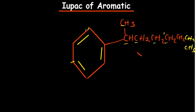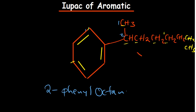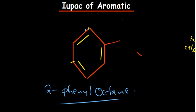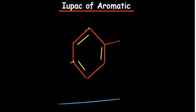With a longer chain, the benzene attached on carbon two gives 2-phenyloctane. So benzene as a prefix is called phenyl, and as a parent structure we just call it benzene.